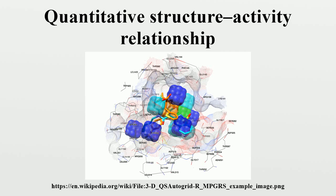3D QSAR refers to the application of force field calculations requiring three-dimensional structures, e.g., based on protein crystallography or molecule superimposition. It uses computed potentials, e.g., the Lennard-Jones potential, rather than experimental constants, and is concerned with the overall molecule rather than a single substituent. It examines the steric fields, hydrophobic regions, and electrostatic fields. The created data space is then usually reduced by feature extraction. The learning method can be any machine learning method, e.g., support vector machines. An alternative approach uses multiple instance learning by encoding molecules as sets of data instances, each representing a possible molecular conformation, with a label assigned corresponding to the activity of the molecule.